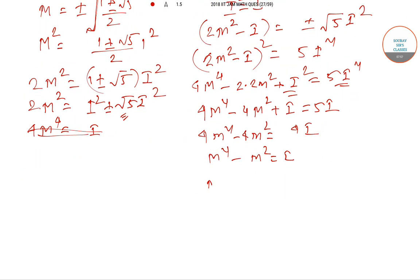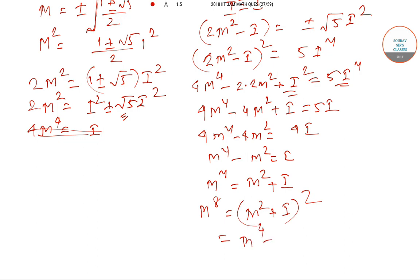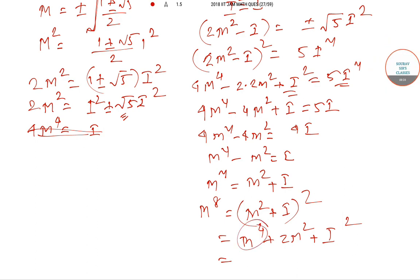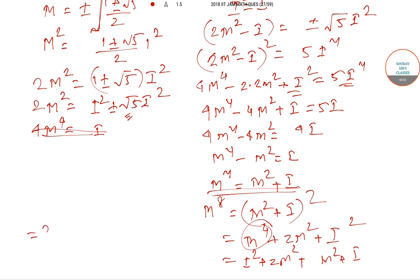We need M^8, which is just (M^4)². From M^4 − M² = I, squaring gives M^8 = (M² + I)². We already have the value of M^4, so substituting: M^8 = M^4(2M² + I²) = (M² + I)(2M² + I) = 3M² + 2I. Since I² = I, the final answer is M^8 = 3M² + 2I.